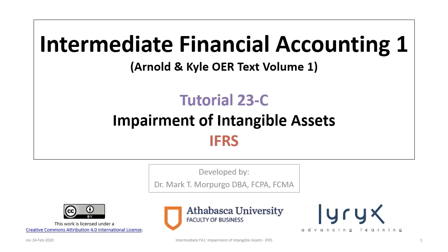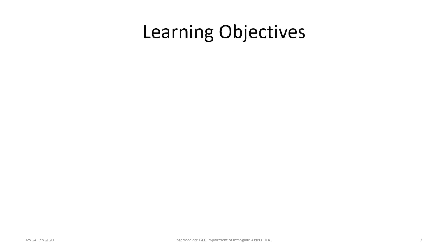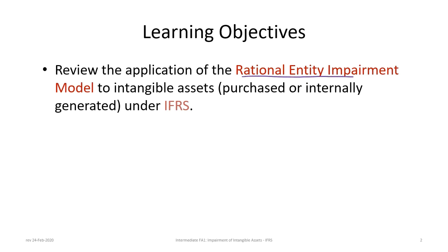Hello and welcome to Intermediate Financial Accounting 1 Tutorial 23C. This is the third of three tutorials focused on accounting for intangible assets. Tutorial 23A focused on recognition of internally generated intangible assets under both ASPE and IFRS. Tutorial 23B reviewed accounting for impairment of intangible assets under ASPE. This tutorial will review accounting for impairment of intangible assets under IFRS, based on the application of the rational entity impairment model to intangible assets either purchased or internally generated under IFRS.